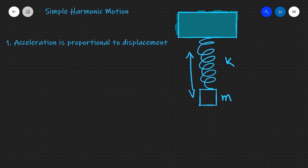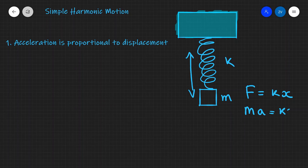The first condition clearly applies to this case because the only force acting on our mass m is the elastic force, which is given by the expression kx. So if the net force is equal to kx, assuming there's no gravity in this case, then mass times acceleration equals kx, which means the acceleration will be proportional to (k/m) times x.